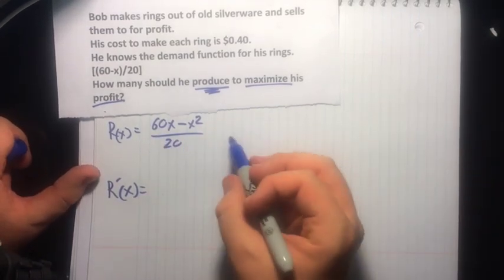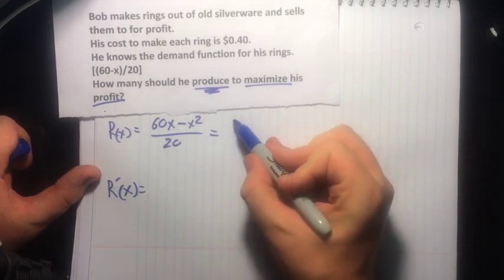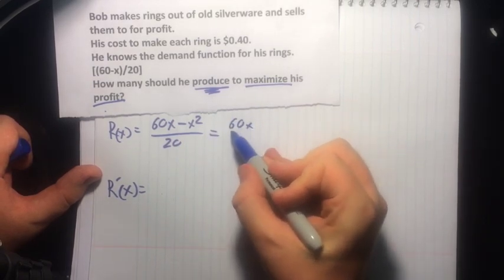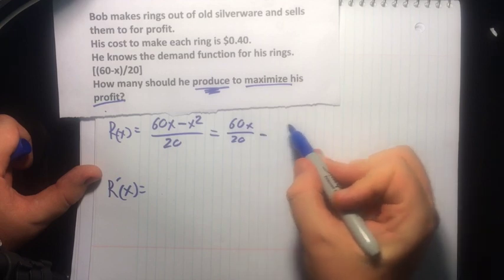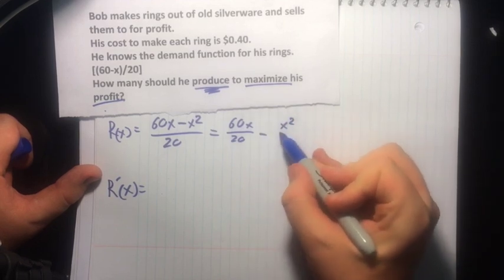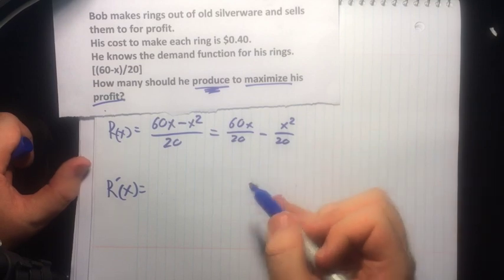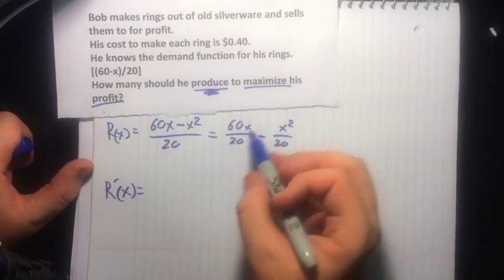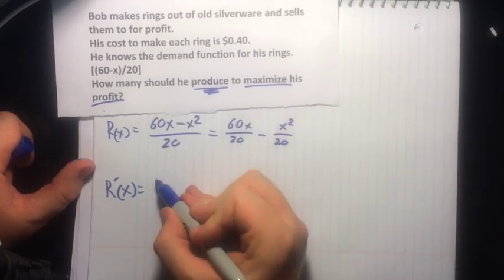To take the derivative of this, I'm going to want to make it look a little prettier, which I can do: divide it by 20, minus—I'll just separate these terms—divide it by 20. That looks a lot nicer. So when I want to take the derivative of this, this x just becomes 1.